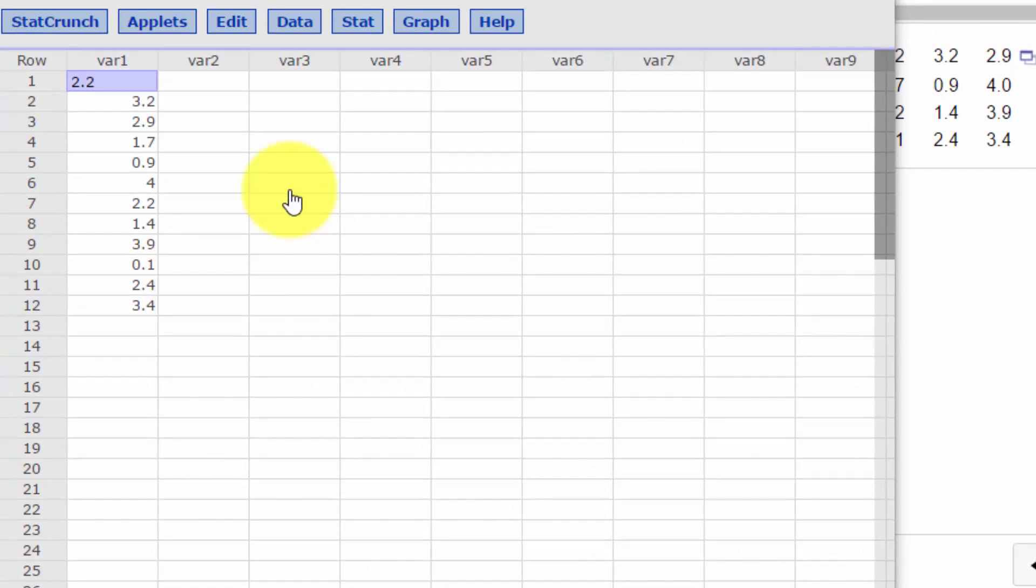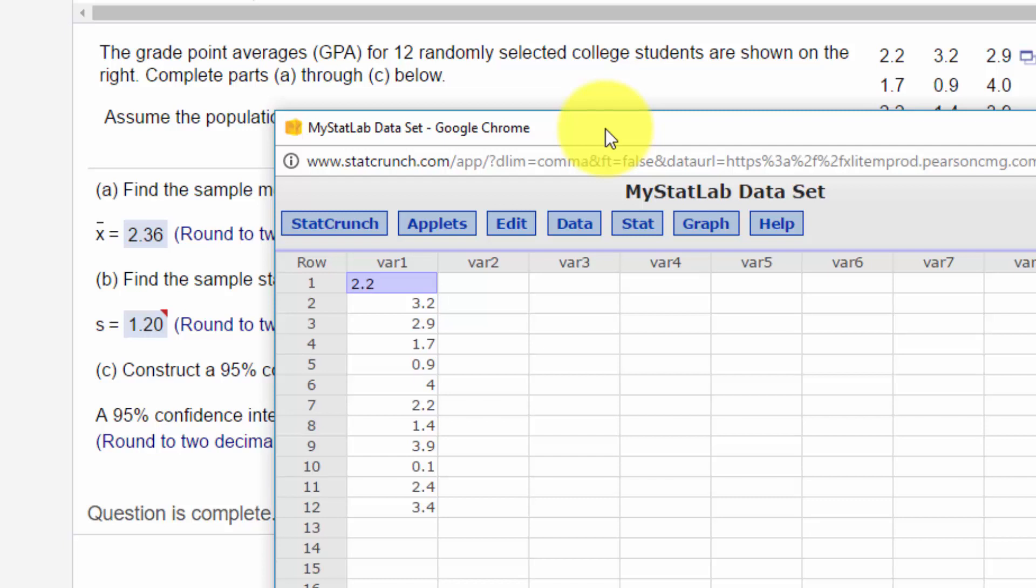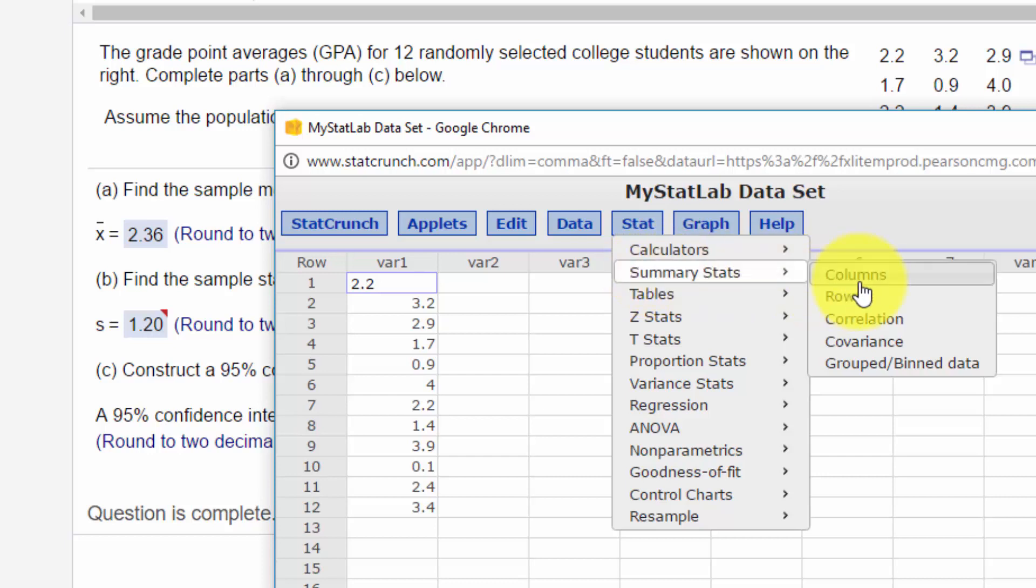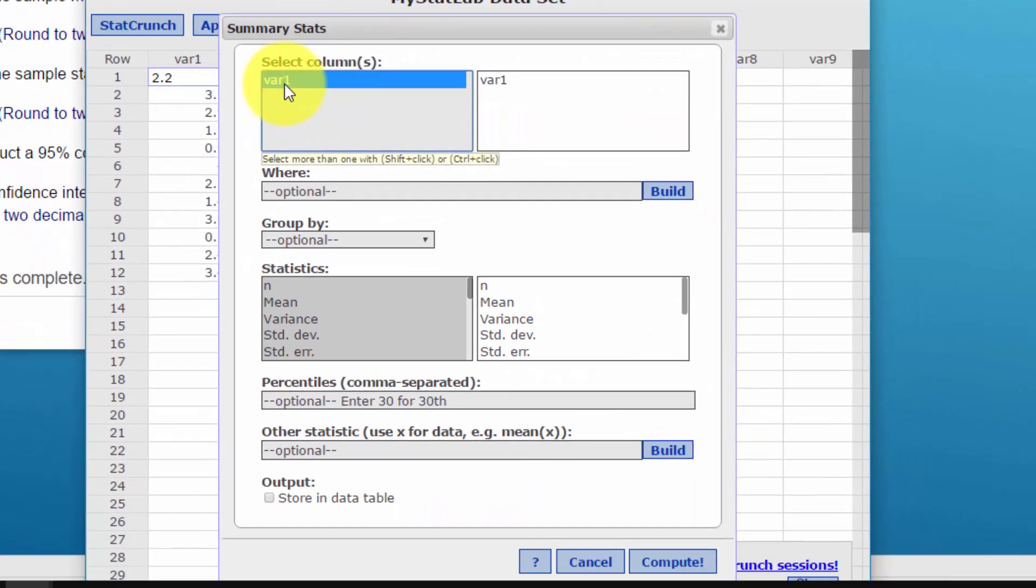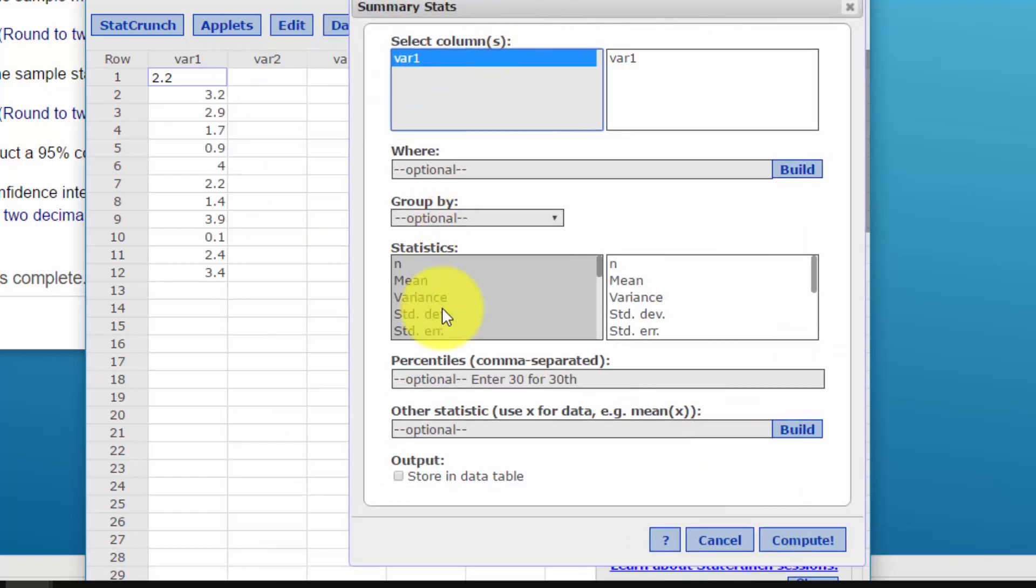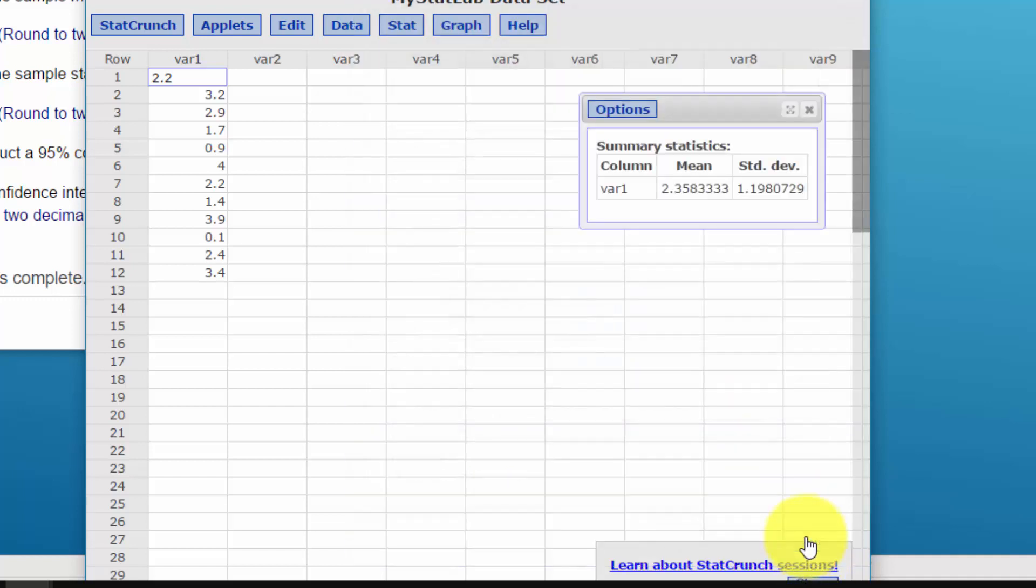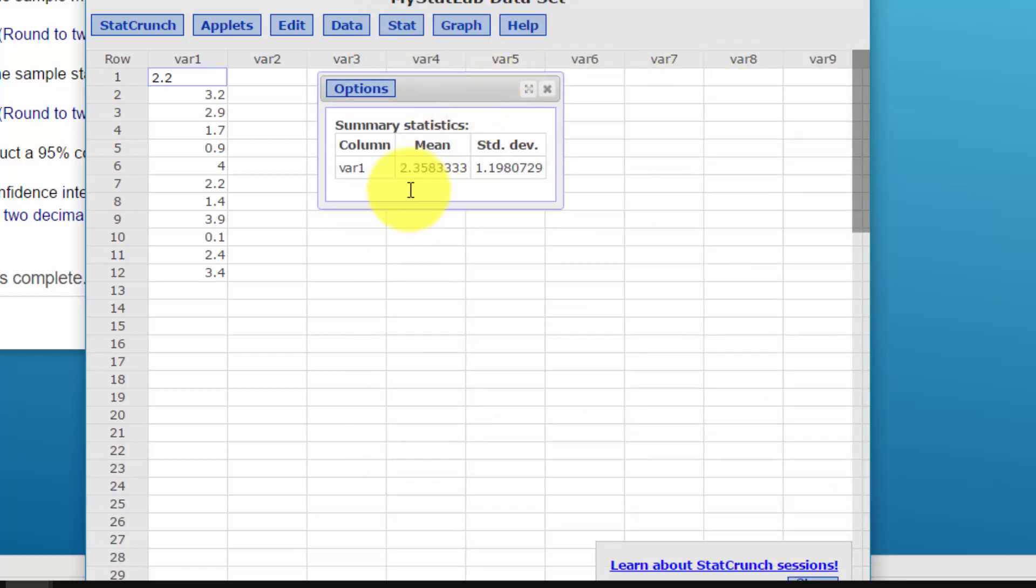Okay, we've got our data now entered into StatCrunch. And the first thing I want to do is come up with my mean and standard deviation. I'm going to Stat, Summary Stats, Columns, and select that VAR1 column where our data is. We can get a lot of statistics, but we just need the mean. I'm going to hold down the control and standard deviation. And I'm going to click on Compute. And we get our mean and standard deviation mean of 2.358 and standard deviation of 1.198. So that's what we need to enter into the t-test.